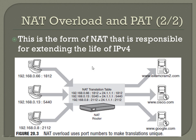Here's a quick example of how PAT or NAT overload works. NAT is set up on the NAT router. Multiple hosts are sending requests to port 80, but each also has a source port number. For example, 192.168.0.66 sends a request to cram2.com on port 80 with a source port of 1812, so the NAT router sets up a mapping for port 1812 to that IP. Another host goes to cisco.com with source port 5440, and another to Google with source port 2112. Each gets the same public address but different port numbers corresponding to the different hosts that initially set up those requests.